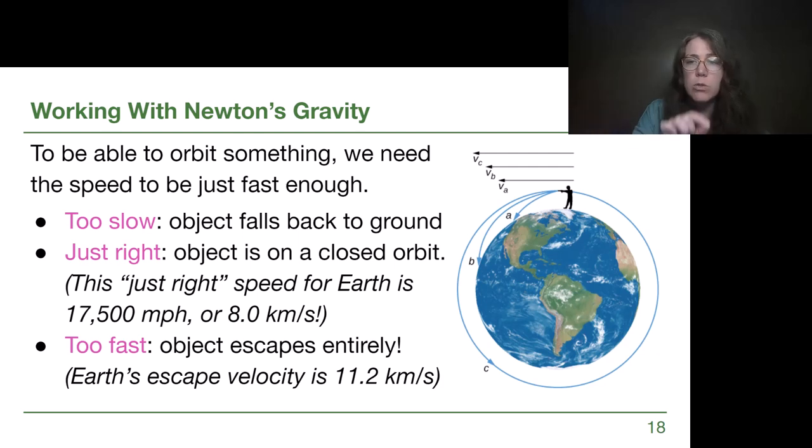The just right speed gets it on a closed orbit and a nice perfect circle orbit as well and that just right speed is 8 kilometers per second or 17,500 miles per hour. That's pretty fast, which is why it's tough to get rockets into space and to get satellites going, but once they're there that's a stable orbit. And if we go too fast, and too fast might be a bad thing for our communication satellites, but too fast is great if we're trying to get to the moon or to Mars, we can escape Earth's gravity and actually make it out of a closed orbit and out into the solar system. The escape velocity for Earth is 11.2 kilometers per second, so a little bit faster, but not like double the circular orbit speed.